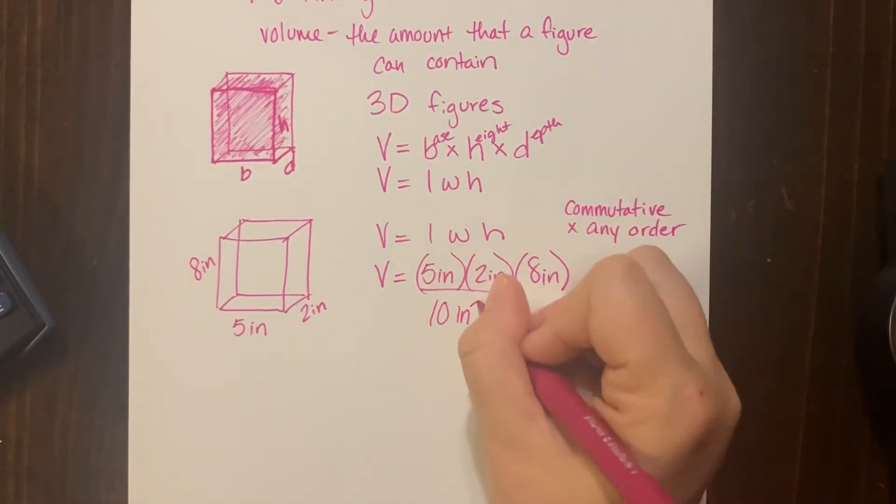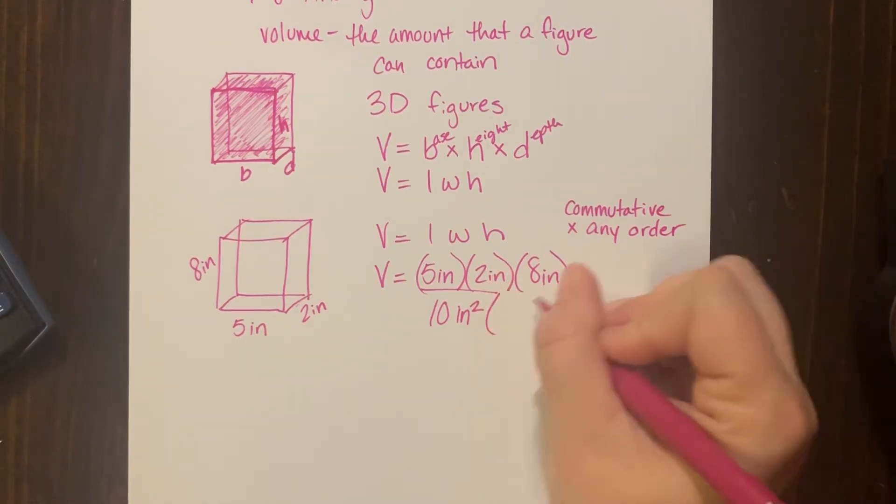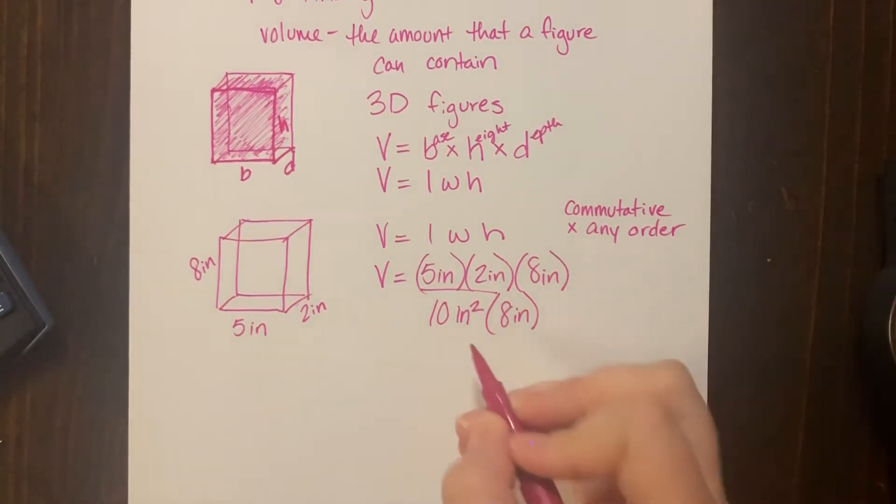Inches times inches is inches squared, and then I'm going to bring down what I haven't used yet. All right, ten times eight is 80.